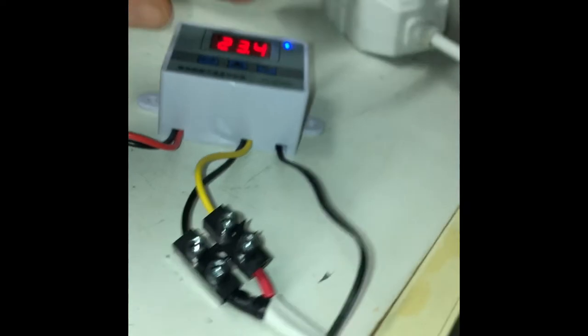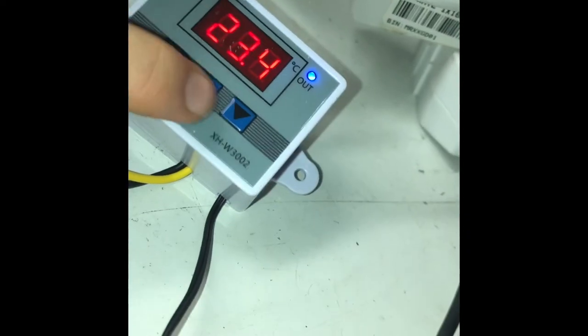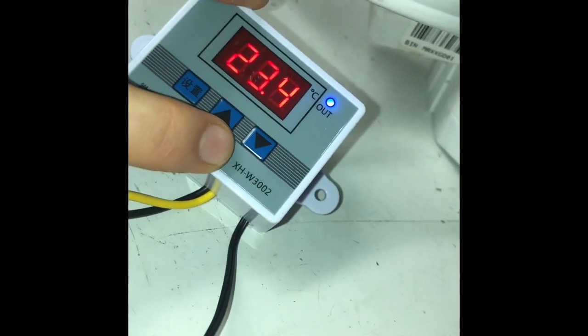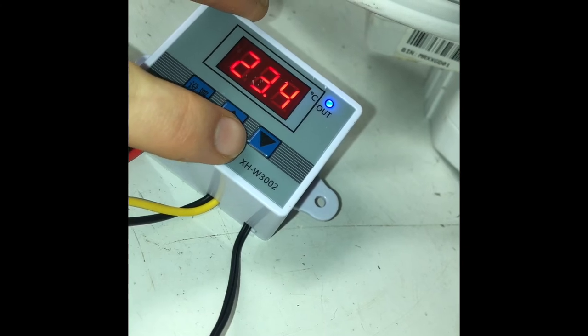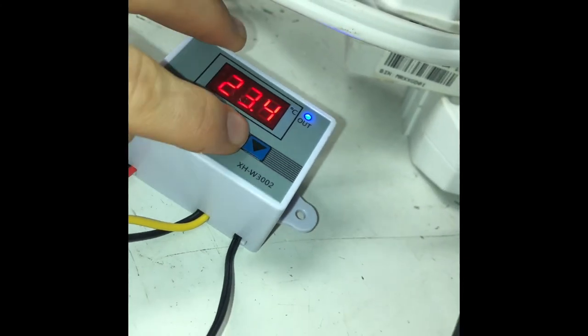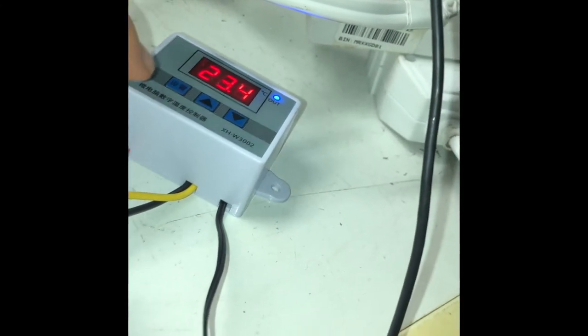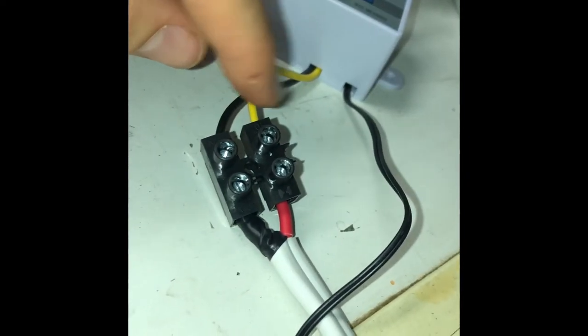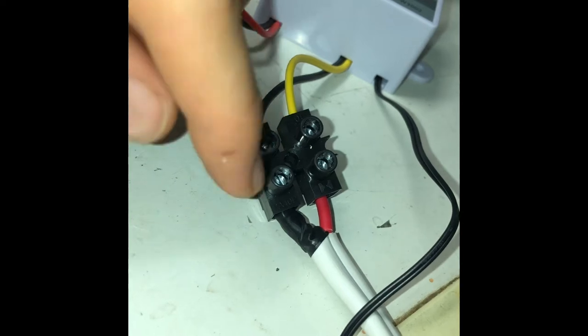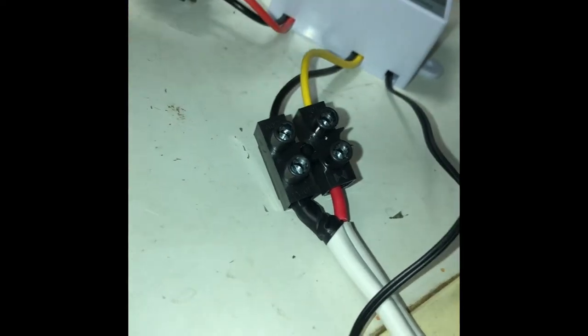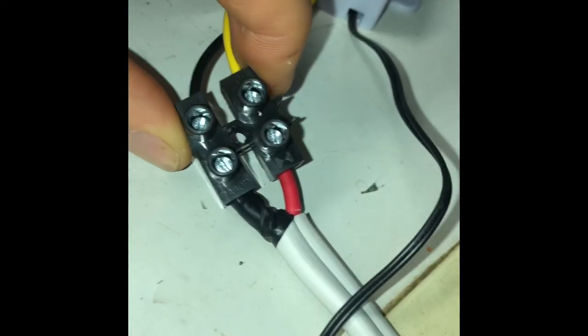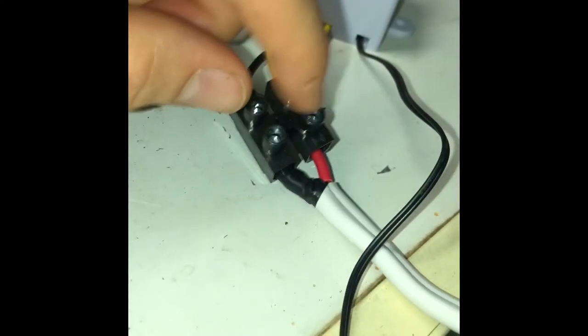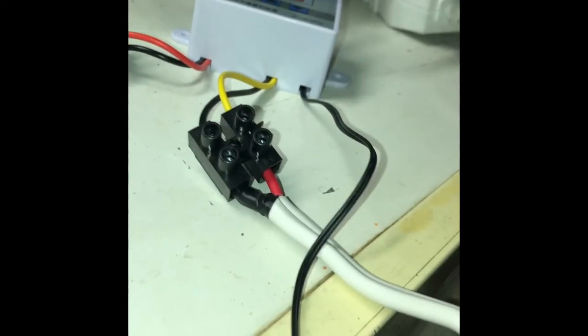So basically this is the name of the thermostat over there. XHW 3002. Over there. And then yeah basically the yellow goes with the red and the black goes with the black. I'm not sure if it's right but it works. So that's all you do there. As you can see this is quite nice socket over here. Connectors. I'm not sure exactly what you call them. But that's what I did there.